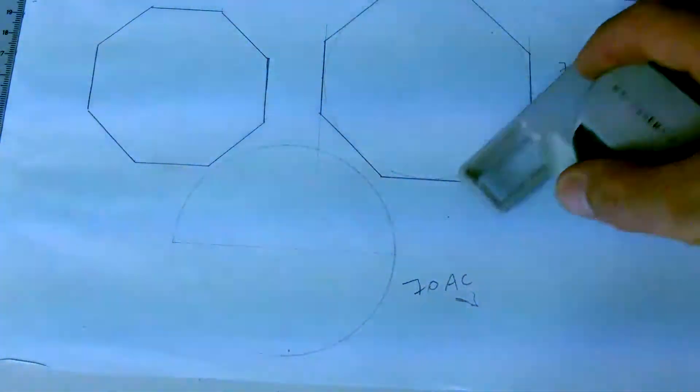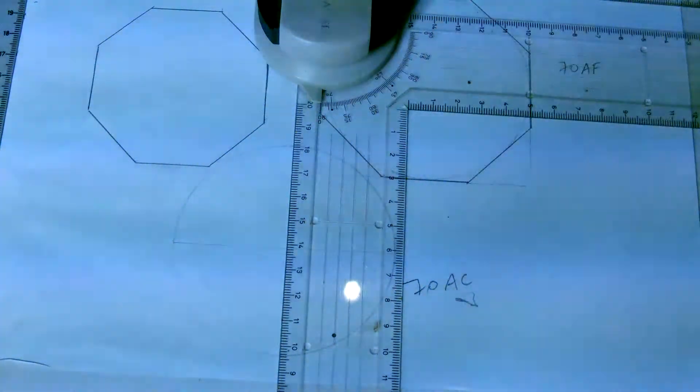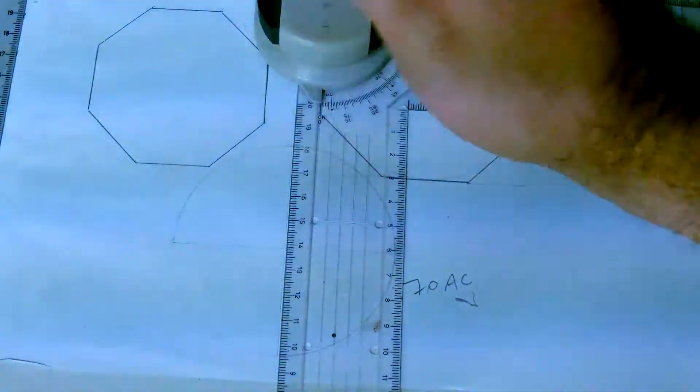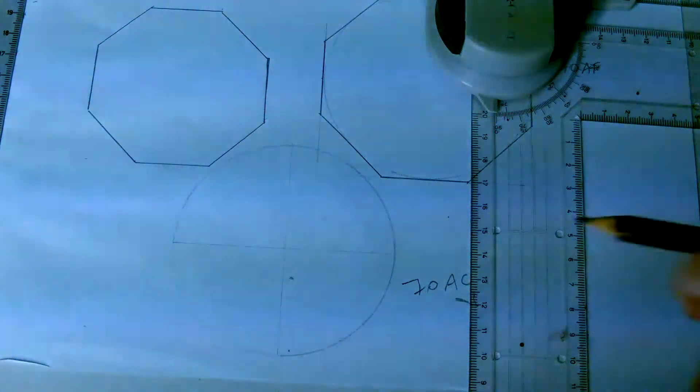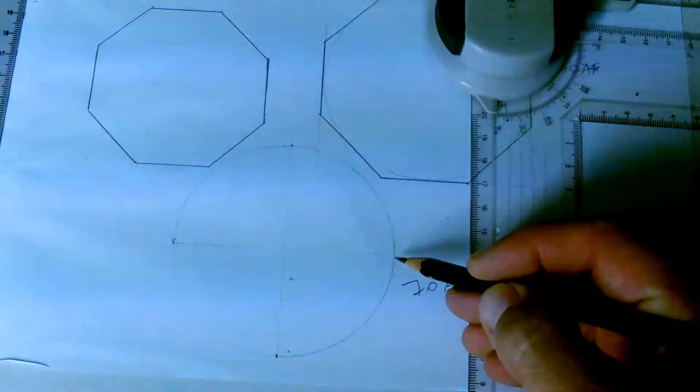So I'd run a horizontal line and a vertical, a vertical and a horizontal diameter. That gives you already the four points, the four points of my octagon.